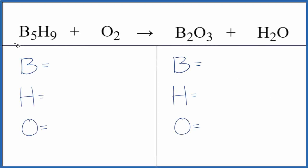Let's balance the equation for B5H9 plus O2 and look at the type of reaction. Let's start with the type of reaction. Because we have this compound here and it's combining with oxygen, we could call this a combustion reaction.